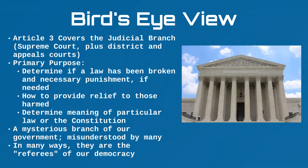So an overview of Article 3: as I said, it covers the judicial branch, most notably the Supreme Court, but also extremely important, the district courts and these appeals courts, which are part of our federal court system. The primary purpose of the judicial branch can really be broken into three parts, but two of those are very closely related.